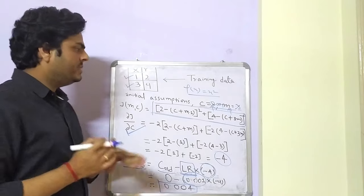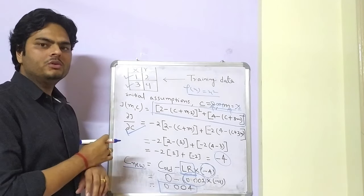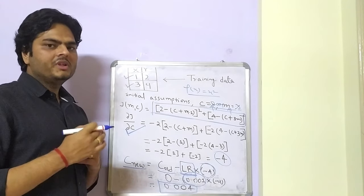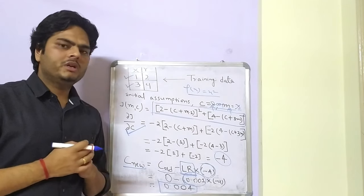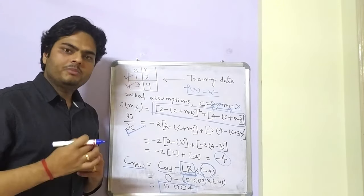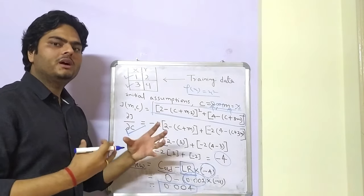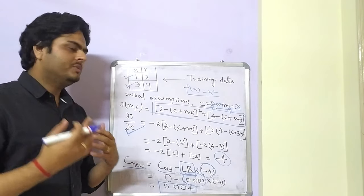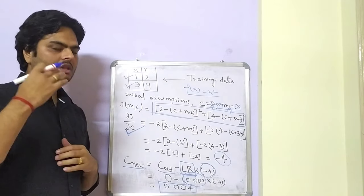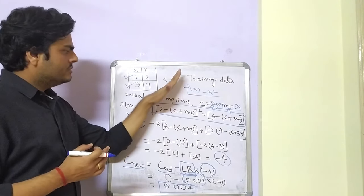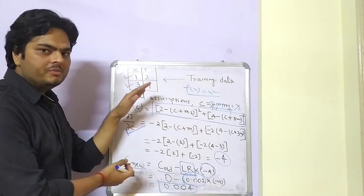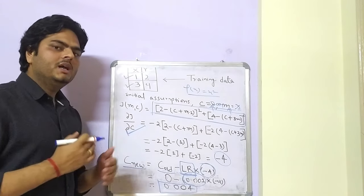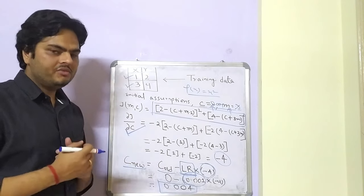In this example I tried to explain, using the cost function of linear regression, how gradient descent performs parameter optimization in the background. If you have any doubts, please write them in the comments. These concepts are very important when it comes to neural network backpropagation — how weights and biases are optimized using a loss function. These form the base of artificial neural networks and many other models. I will explain those concepts in future videos. Until then, stay safe and take care.